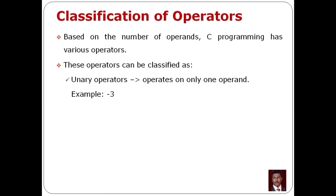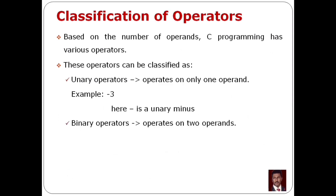Example: minus three. This is a negative number. The minus here is the unary minus operator, and three is the single operand. There is only one operand.